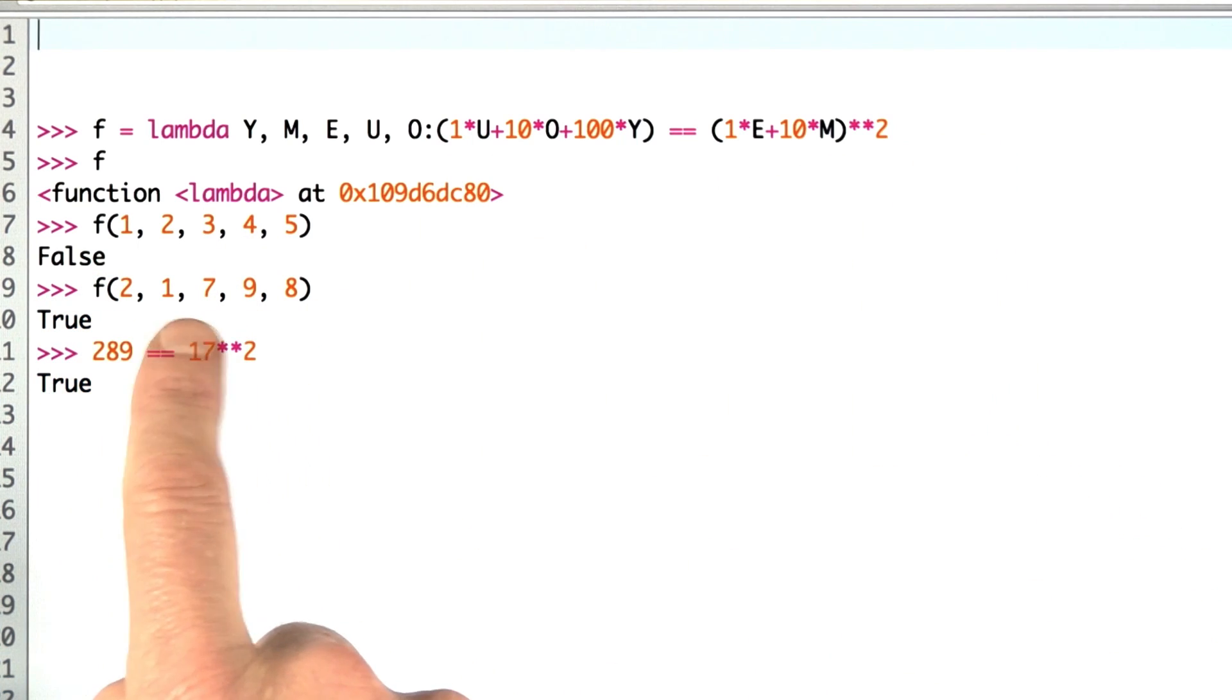Then I asked, is it true for 2, 1, 7, 9, 8? Yes, that's true. The reason is because it works out to this expression, 289 equals 17 squared.